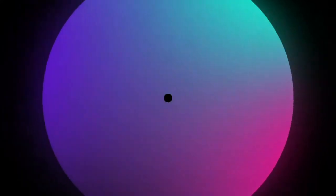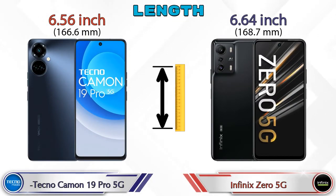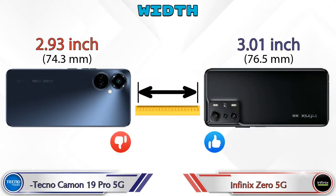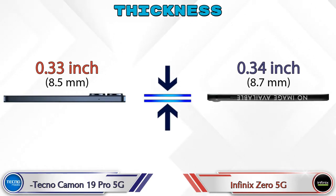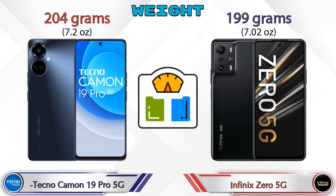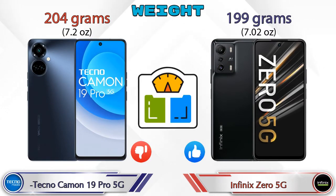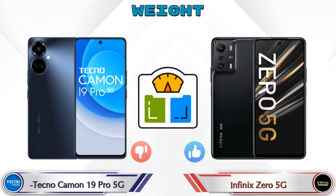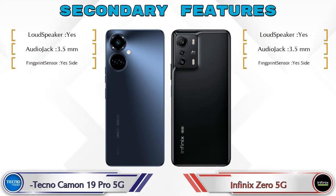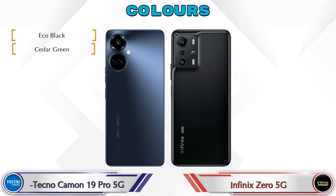For dimensions: length — the Camon 19 Pro 5G is 6.56 inches and the Zero 5G is 6.64 inches. Width — Camon 19 Pro 5G is 2.93 inches and Zero 5G is 3.01 inches. Thickness — Camon 19 Pro 5G is 0.33 inches and Zero 5G is 0.34 inches, which is almost similar. Weight: Camon 19 Pro 5G is 204 grams and Zero 5G is 199 grams.